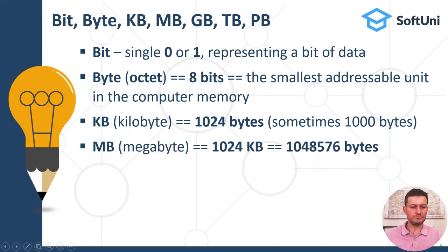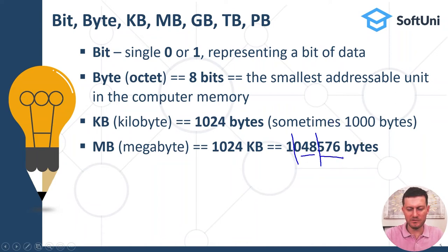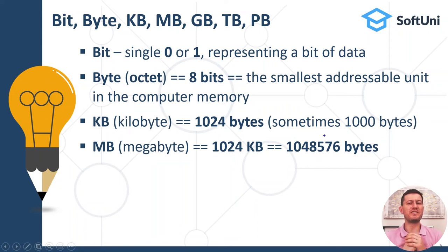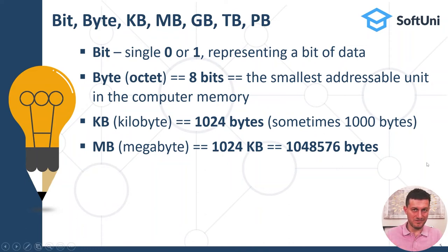The next measurement unit is called megabytes, or MB. It consists of 1024 kilobytes. One megabyte is 1024 kilobytes, or 1,048,576 bytes. For example, megabytes are used to measure photos taken with your smartphone camera, which are typically several megabytes — two or three megabytes of compressed data holding the image pixels and colors.